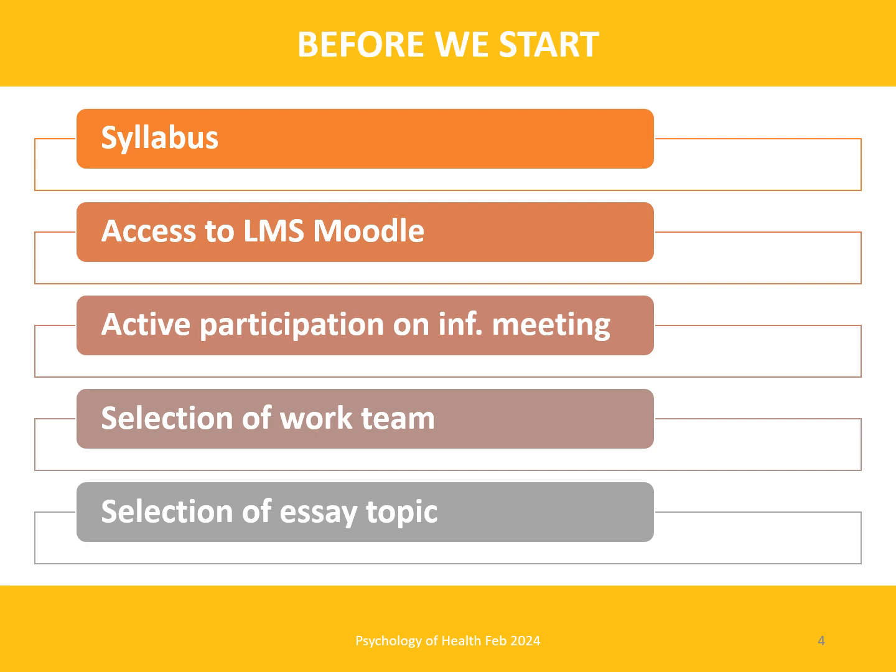You choose the work team and essay topic through a pool in the LMS module. There can be a maximum of five work teams, with a maximum of five and minimum of three students in each team. Work teams cannot be changed during the semester and will be evaluated together for the preparation and presentation of submitted assignments. During the survey period you can change your choice, but after the survey closes it will no longer be possible. The pool will close on February 21st at midnight.